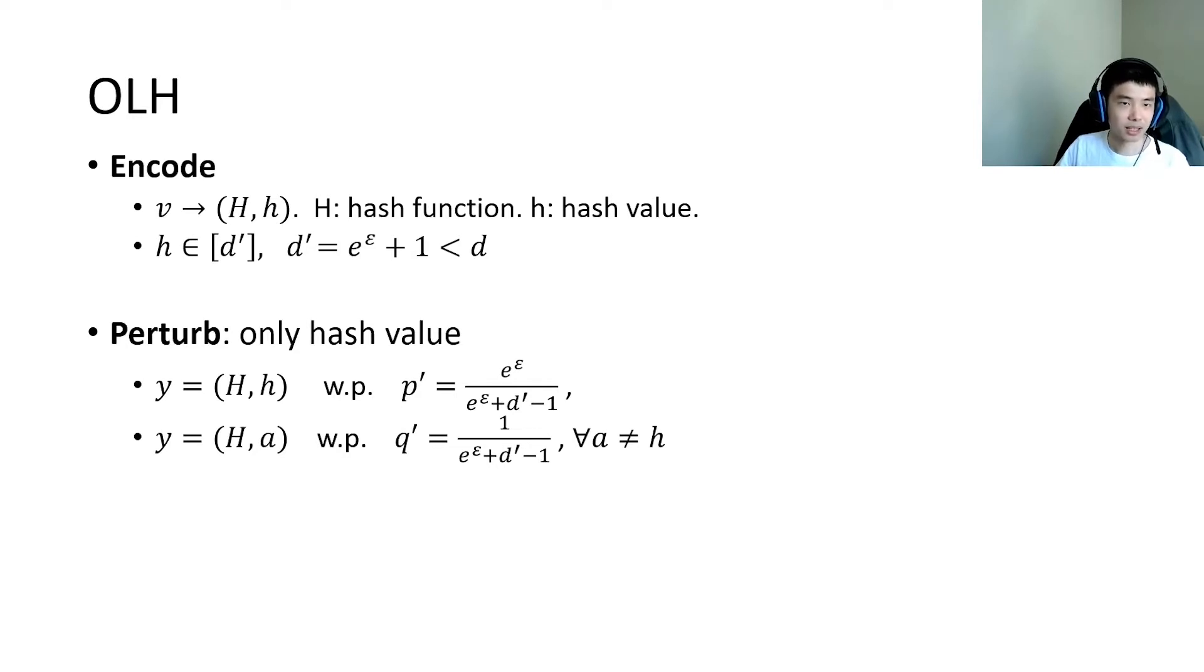Specifically, the hash value stays unchanged with probability p' and switches to a different hash value with probability q'. In the aggregate step, a perturbed pair y that equals to (h, a) supports any item b that is hashed to a by h.